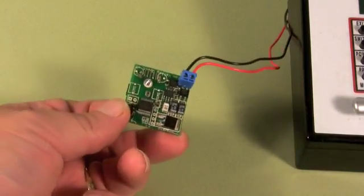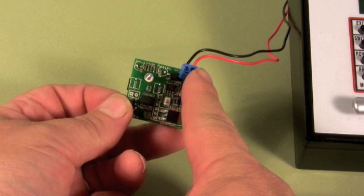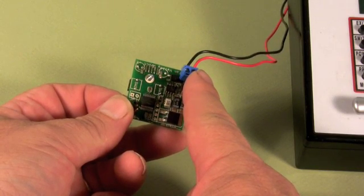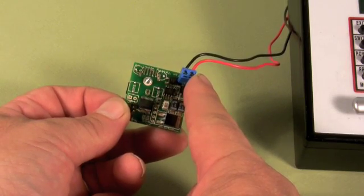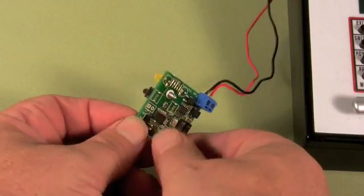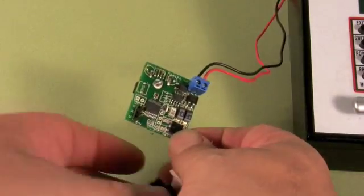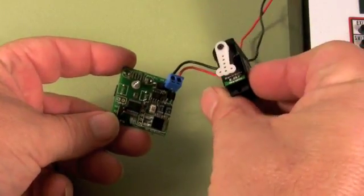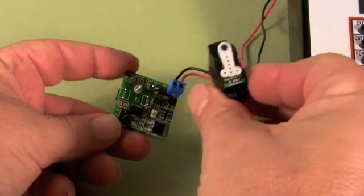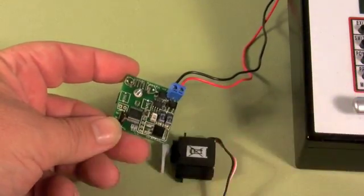On the back side we have a place to plug in to your DCC bus for power and also to receive the DCC signal. Over here we have a three-pin plug for plugging in a servo. Here is a little servo that you can get with the unit, a little eSky sub-miniature servo.